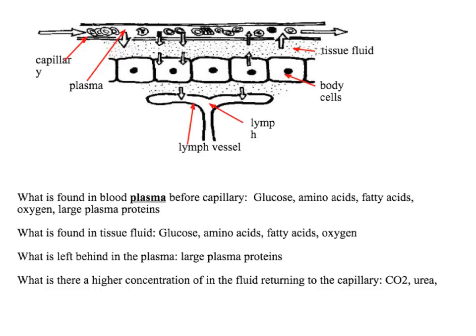You get an exchange of oxygen, glucose, and other things that the cells need for processes such as respiration — these will diffuse into the cells. Waste products like carbon dioxide and urea will diffuse out of the cells and into the tissue fluid. Any excess tissue fluid that's not reabsorbed into the capillary at the venule end is absorbed into the lymph vessel, forming lymph, which joins back with the blood in a vein later on.